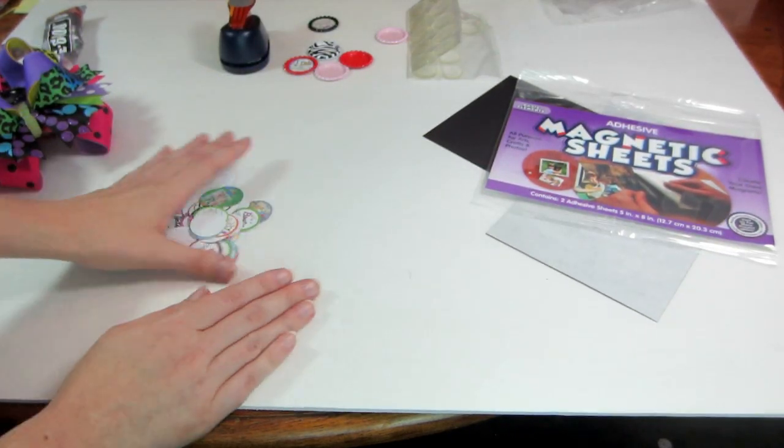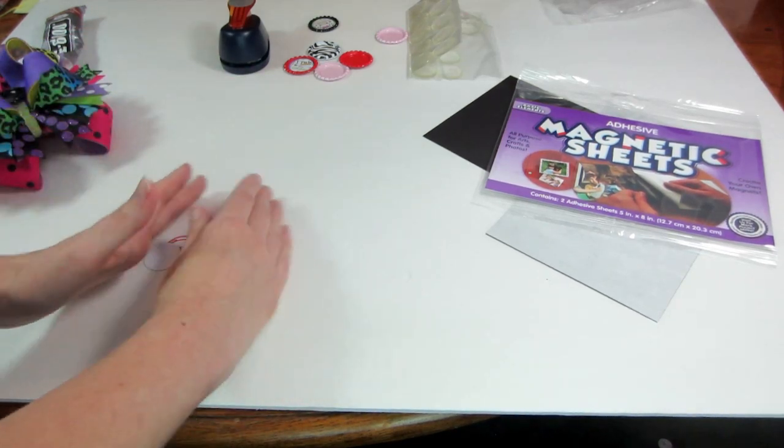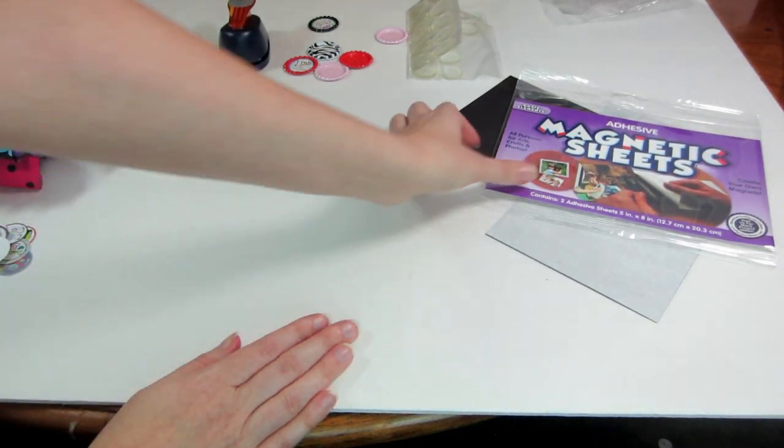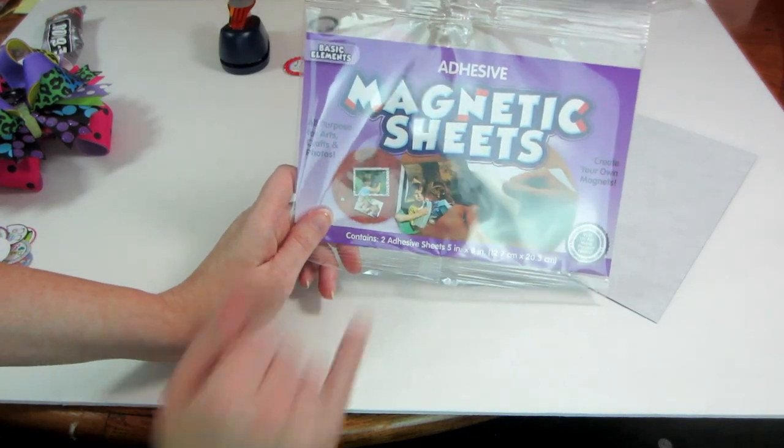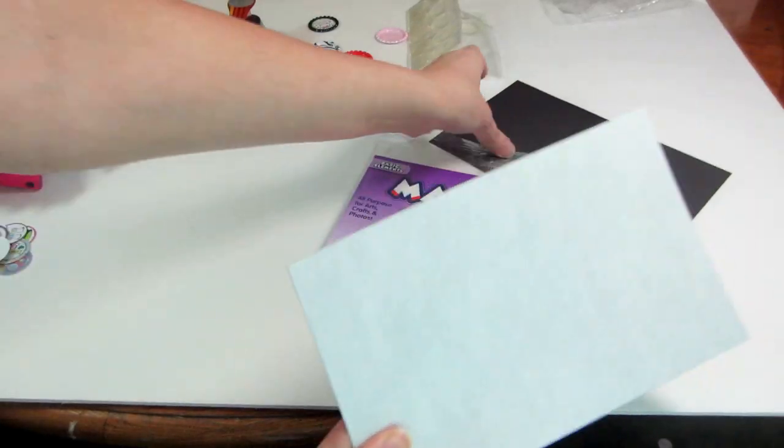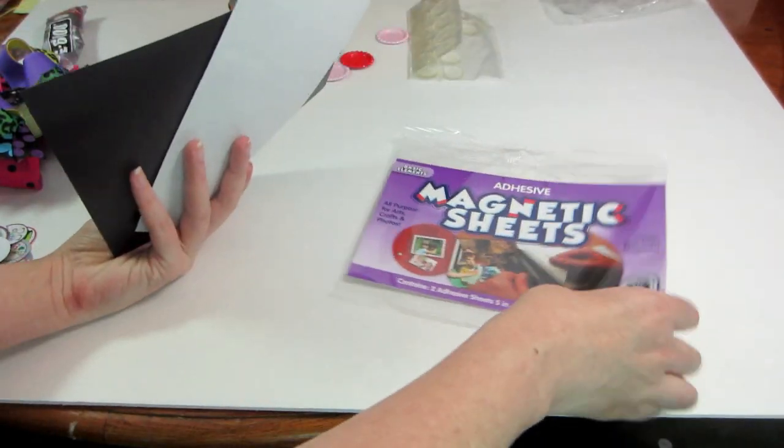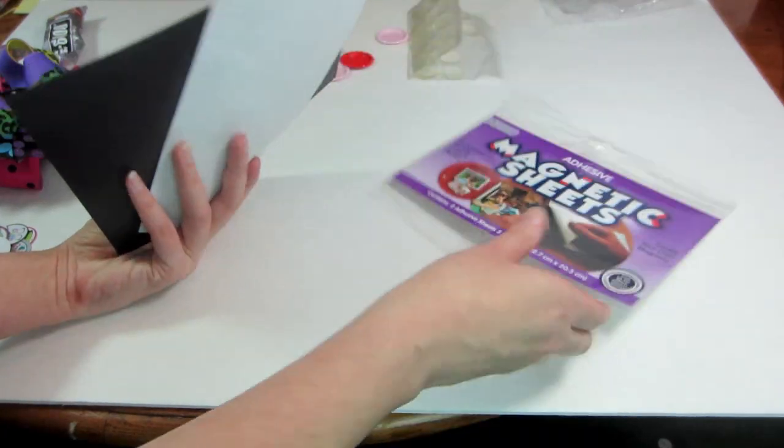Alright, of course you're going to need your many, many, many bottle cap images. You will need these magnetic sheets. They are adhesive and they're really thin and I got two in this pack and I think I paid like two bucks for this, Walmart I believe.